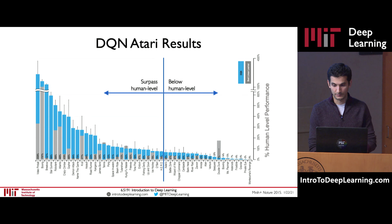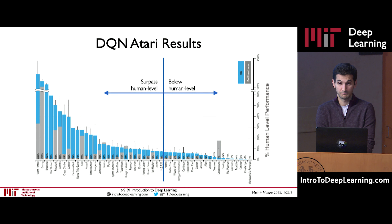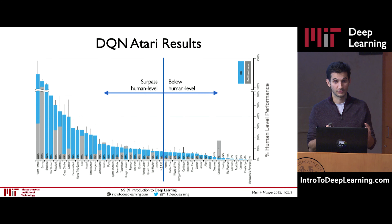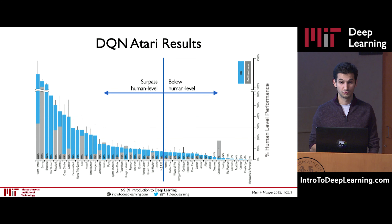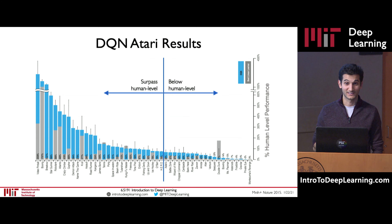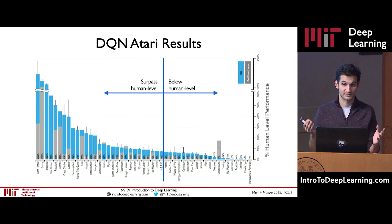They tested this on many games and showed that over 50% of the time, just by applying this intuitive algorithm — where the agent steps in the environment, tries out actions, and maximizes its own reward — reinforcement learning was able to surpass human-level performance just by training neural networks in this manner. There were certain games that were more challenging, but given how simple, clean, and elegant this algorithm is, it's still amazing that it works at all.